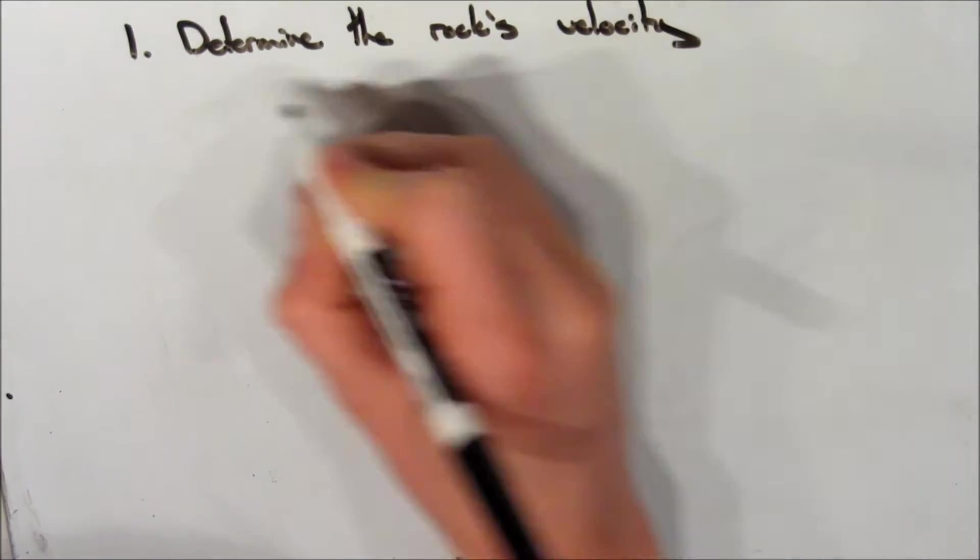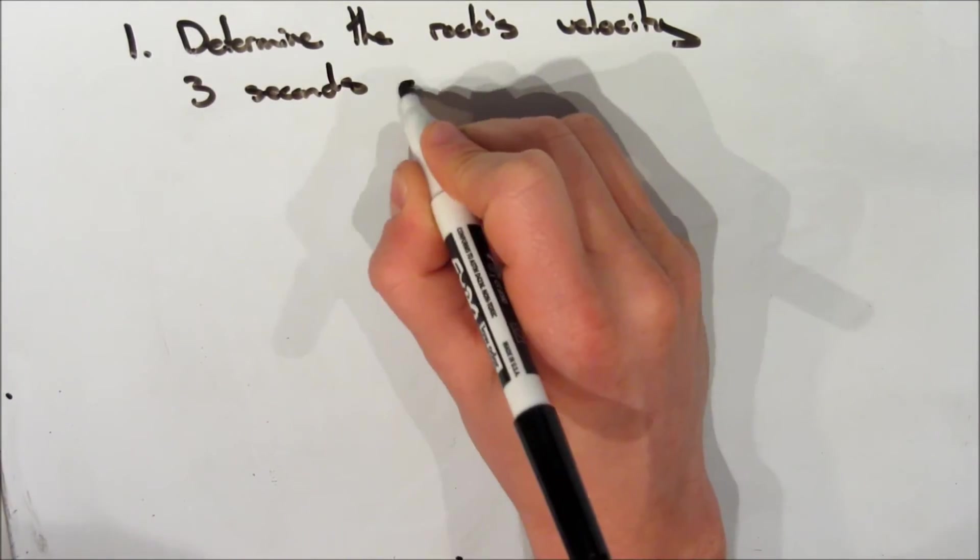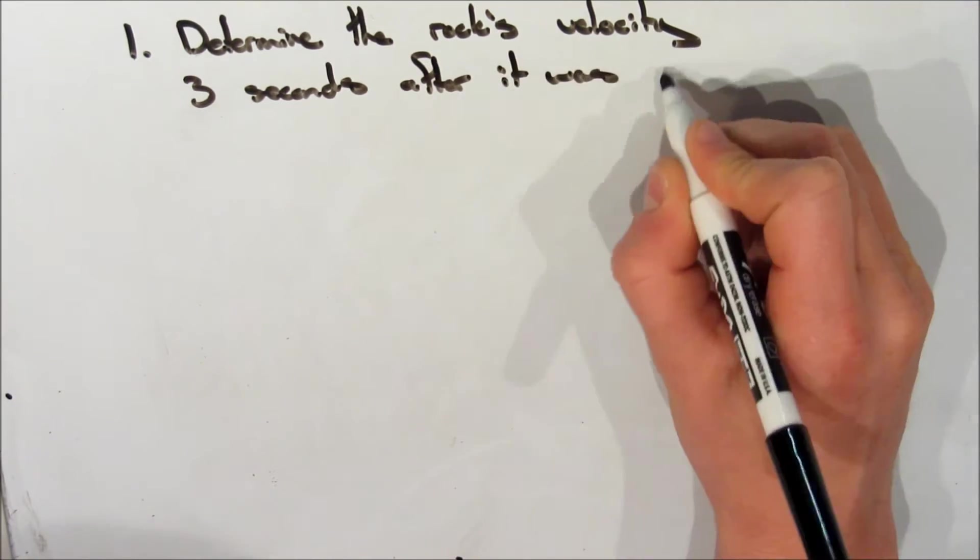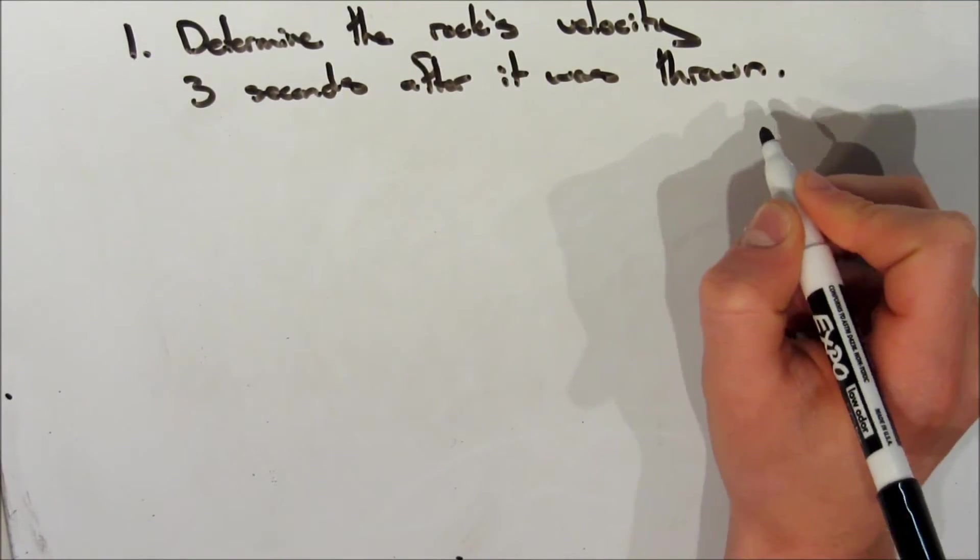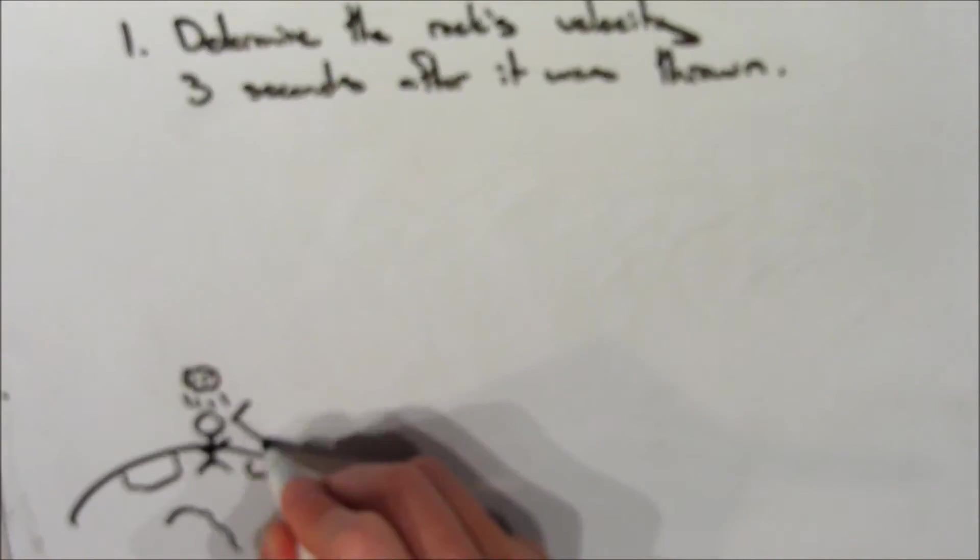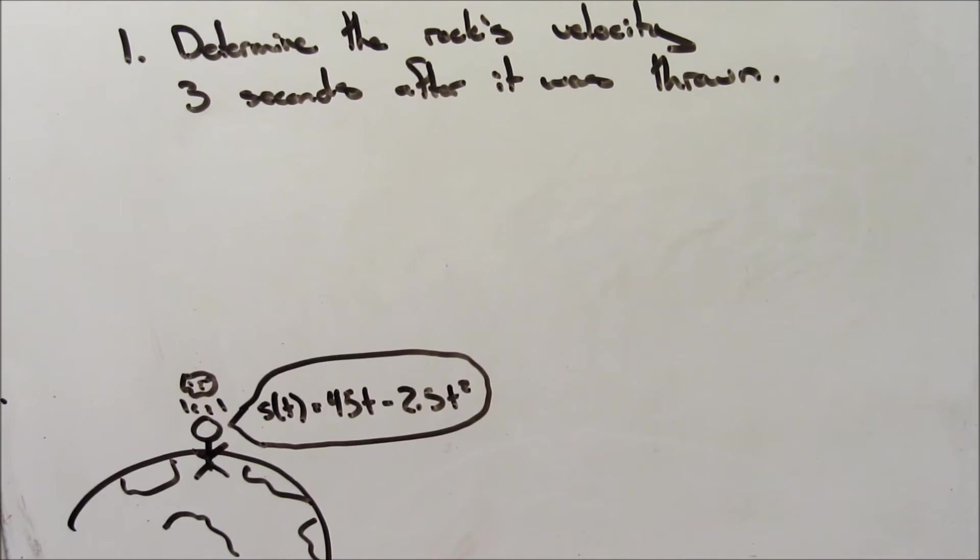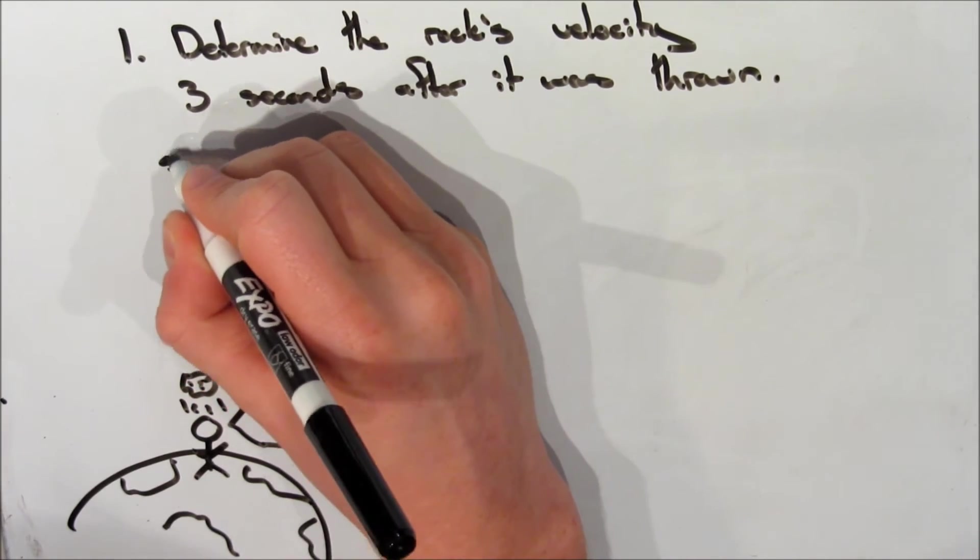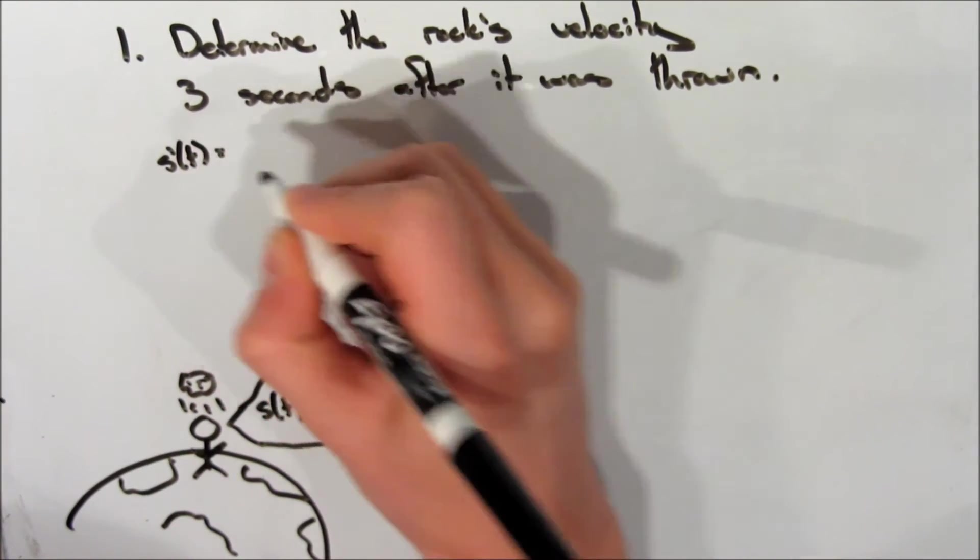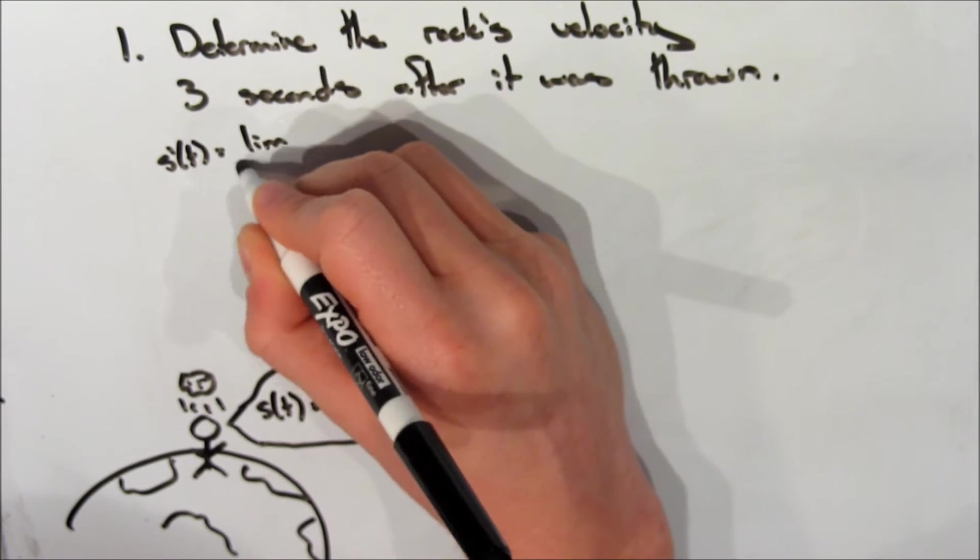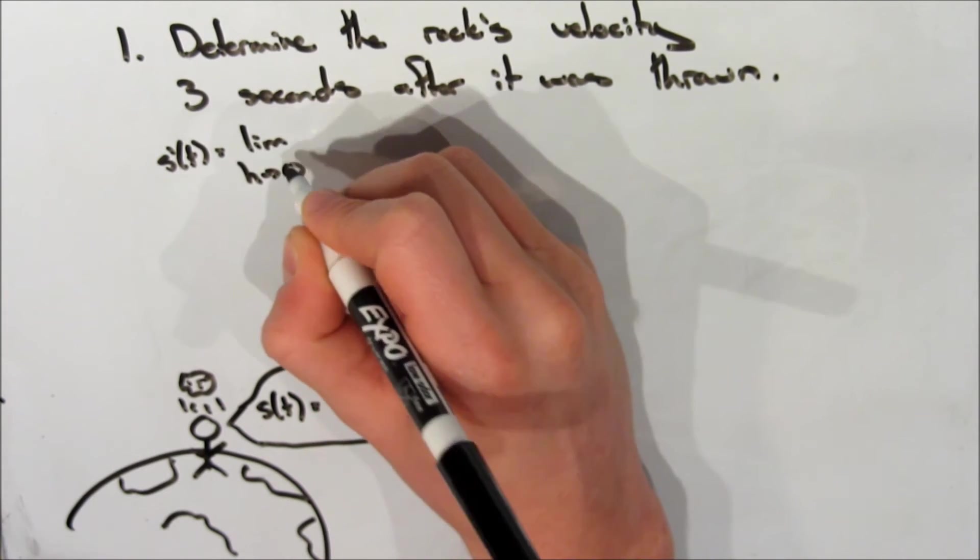Let's take a look at the first question for this scenario. We want to determine the rock's velocity three seconds after the rock was thrown. So how do we go about doing this? So we remember the equation from before, s of t is equal to 45t minus 2.5 t squared.